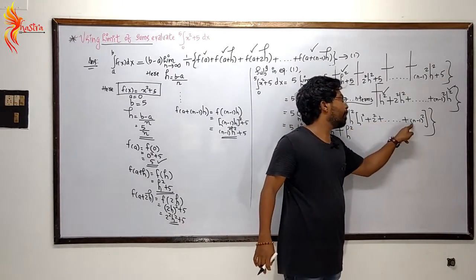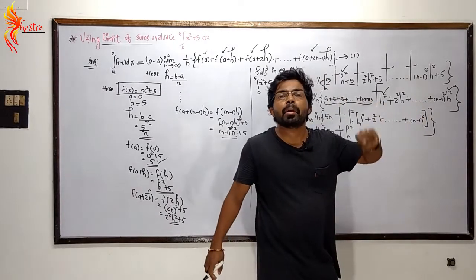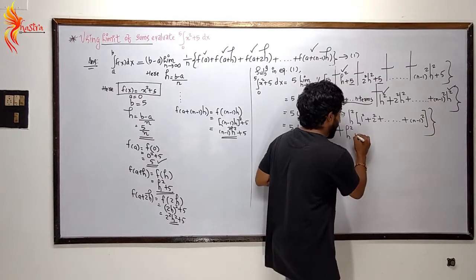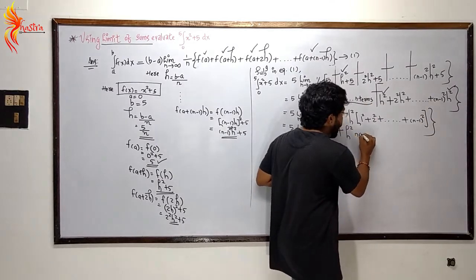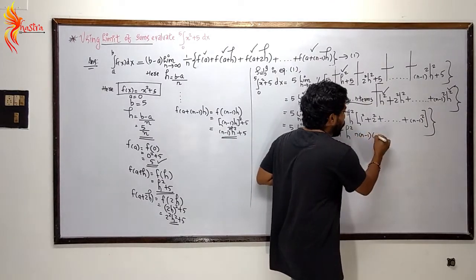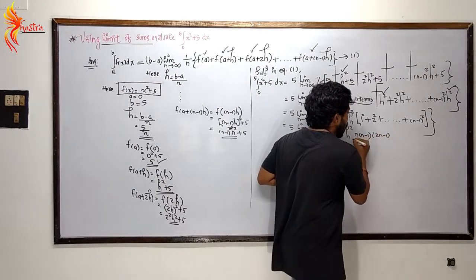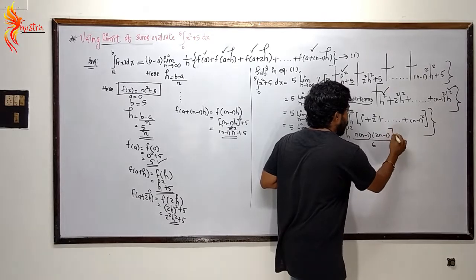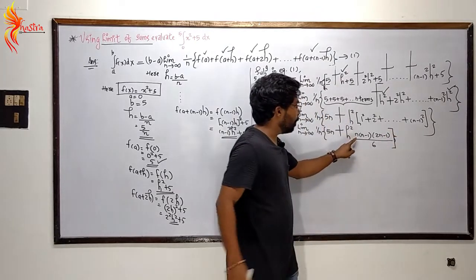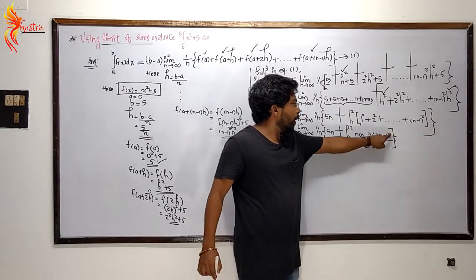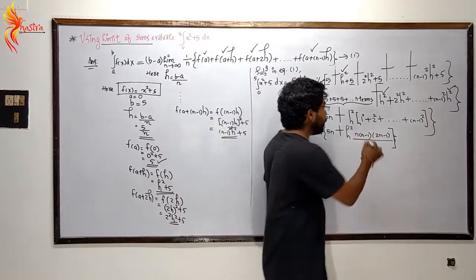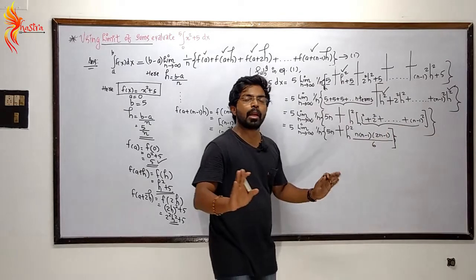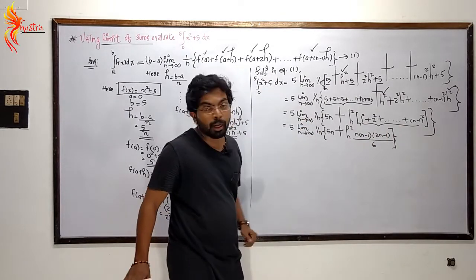Using the formula: 1 squared plus 2 squared plus 3 squared plus ... plus (n minus 1) squared equals n(n minus 1)(2n minus 1) divided by 6. That is the formula.